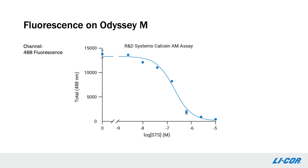Odyssey-M can also be used to detect multiple fluorescence-based viability kits. Here we used R&D Systems' Calcein-AM assay, in which live cells metabolize nonfluorescent Calcein-AM to fluorescent Calcein, which is excited by 490 nanometer light. HeLa cells were treated with staurosporine and then treated with the Calcein-AM reagent. Fluorescence was detected in the 488 channel, resulting in a dose-dependent decrease in signal, indicating reduced cell viability with increasing staurosporine concentration.